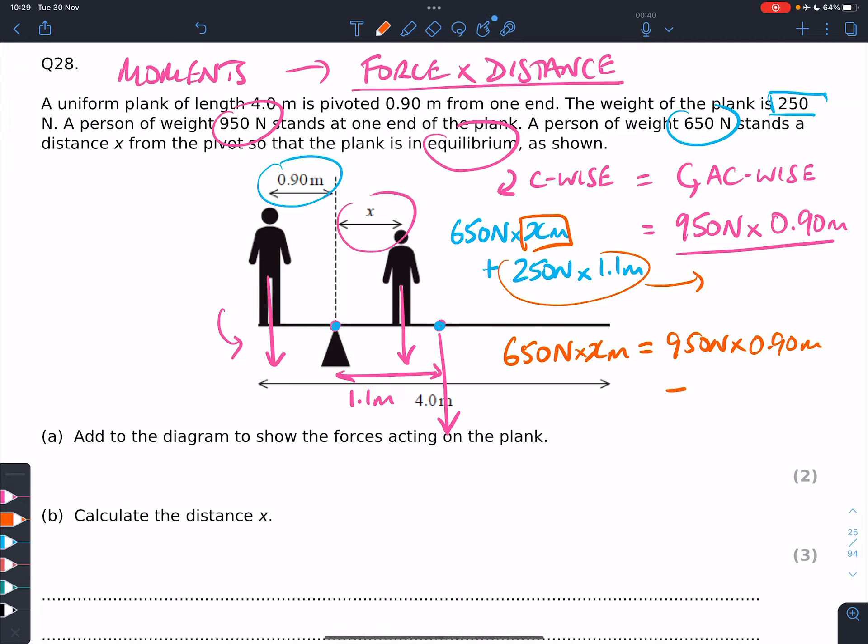And because we've taken it to the other side, it changes sign, 250 newtons, times 1.1 metres. So let's do that on our calculators, so we can practice this. 950 times 0.9 equals 855, minus 250 times 1.1, gives us 580 newton metres. That's the unit.